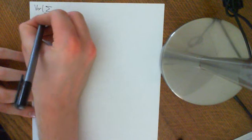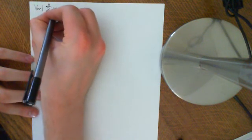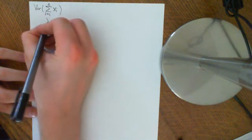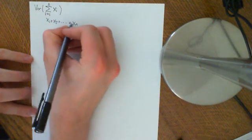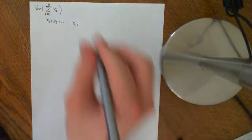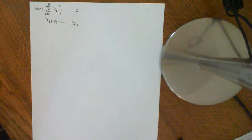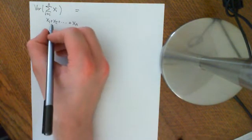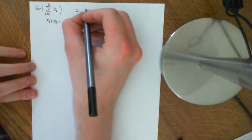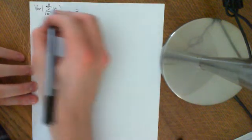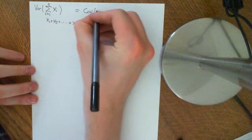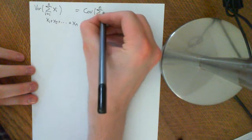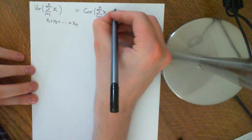Now let's consider the variance of a bigger, more arbitrary sum. If we consider the variance of the sum over i equals 1 to n of xᵢ — that's just x₁ plus x₂ plus etc. — you could think of these as, for instance, n Bernoulli trials for the binomial distribution, or other distributions like the hypergeometric. We can apply the same trick: write this as the covariance of the sum i equals 1 to n of xᵢ with itself, then apply the distributive property.